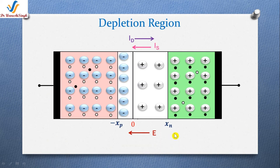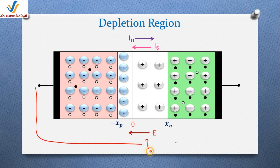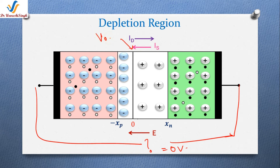Before starting the topic, let me give you the answer to the question I asked in my previous video: what will be the voltage measured between the open circuited PN junction terminals? The answer is zero volts. This is because the built-in voltage, that is the barrier voltage at the junction, is countered or exactly balanced by the contact voltage existing at the metal-semiconductor junctions at the terminals.